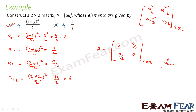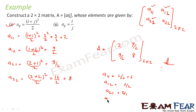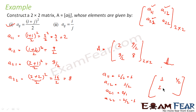Similarly you can do the second part where aij = i/j — it's very simple. You write all the values: a11 = 1/1 = 1, a12 = 1/2, a21 = 2/1 = 2, a22 = 2/2 = 1. So the matrix is [1, 1/2; 2, 1] — this is also a 2×2 matrix and that is my answer.